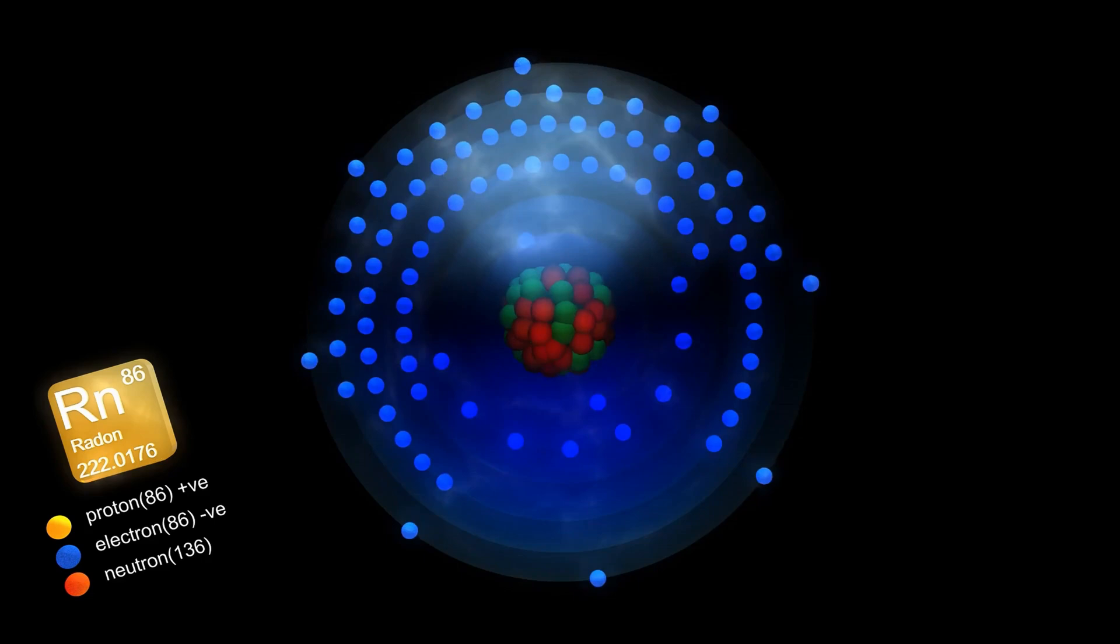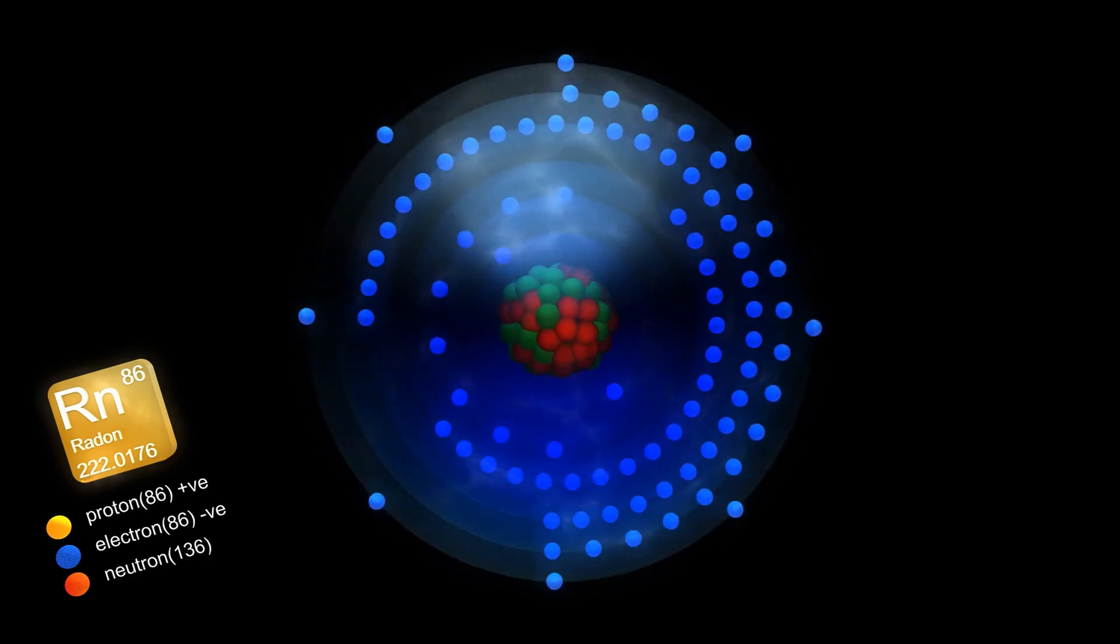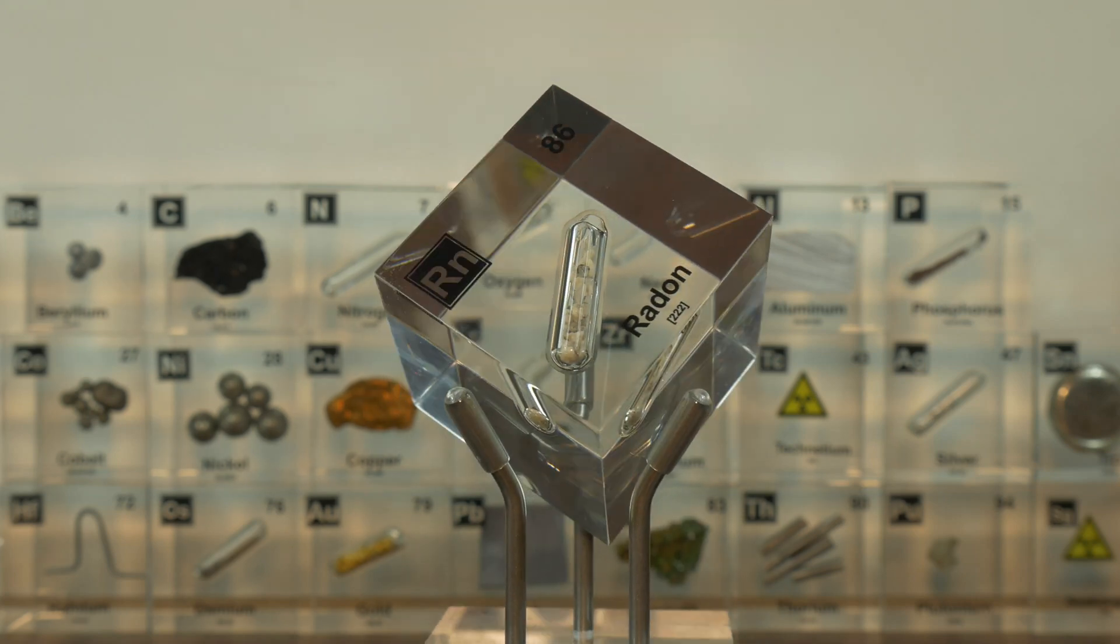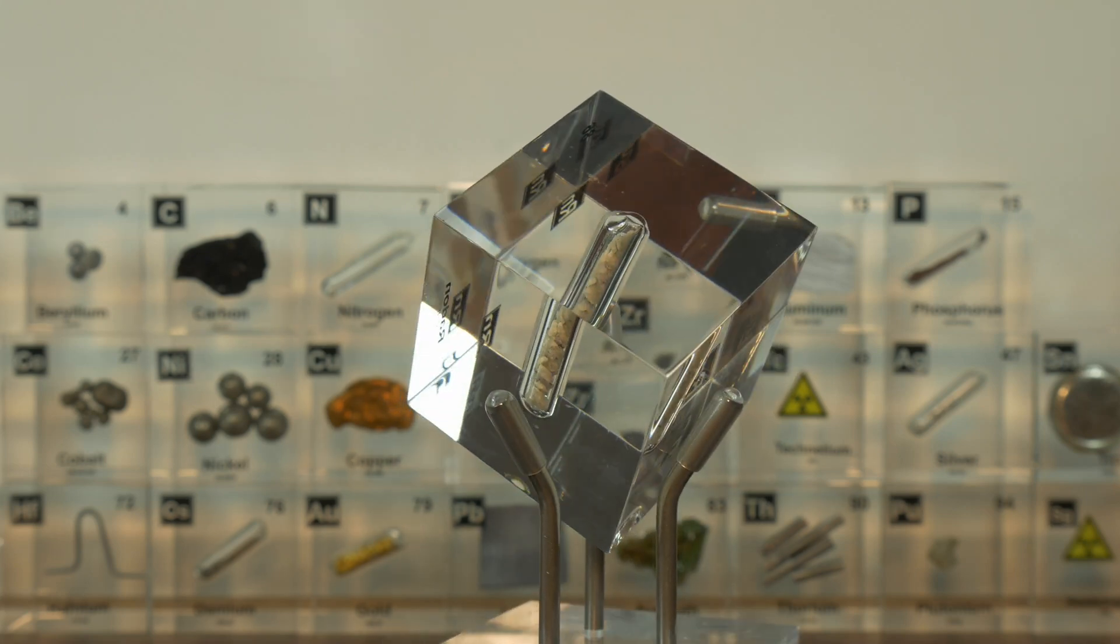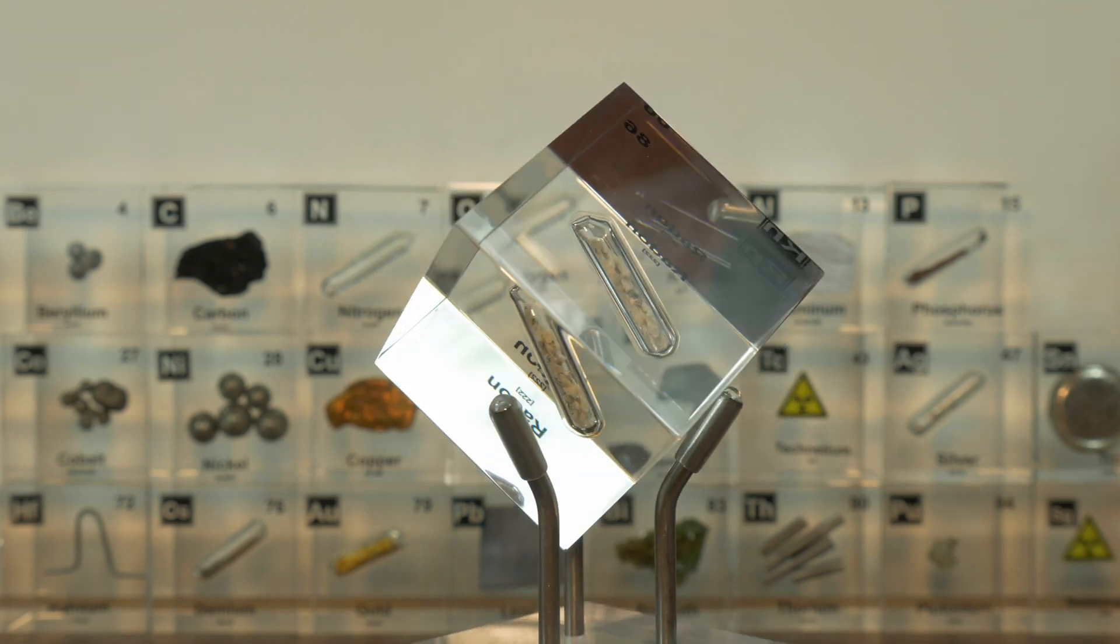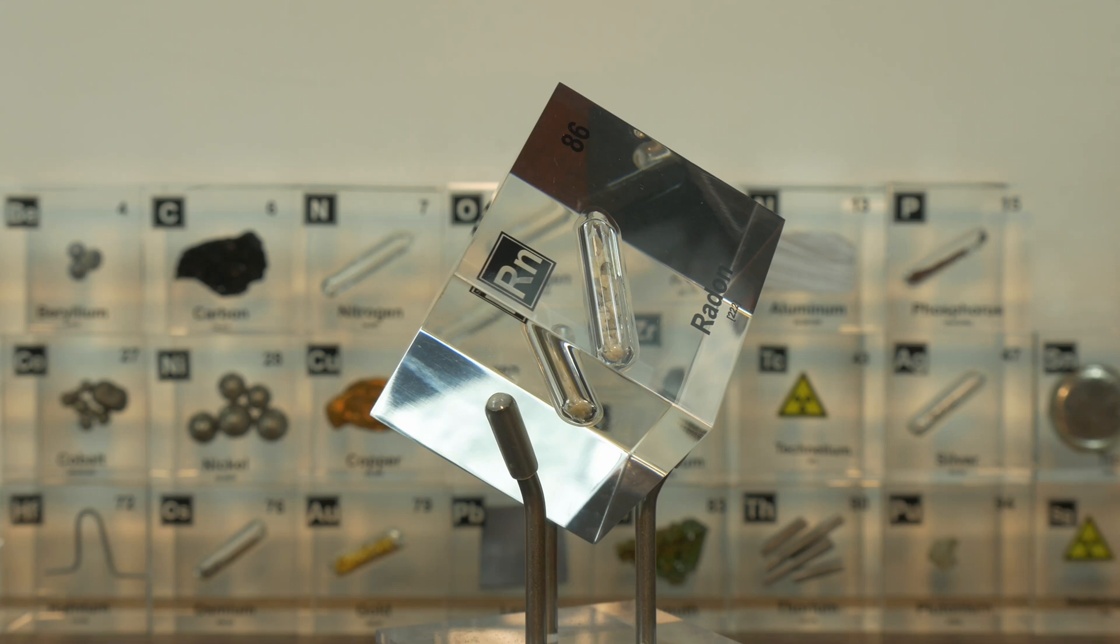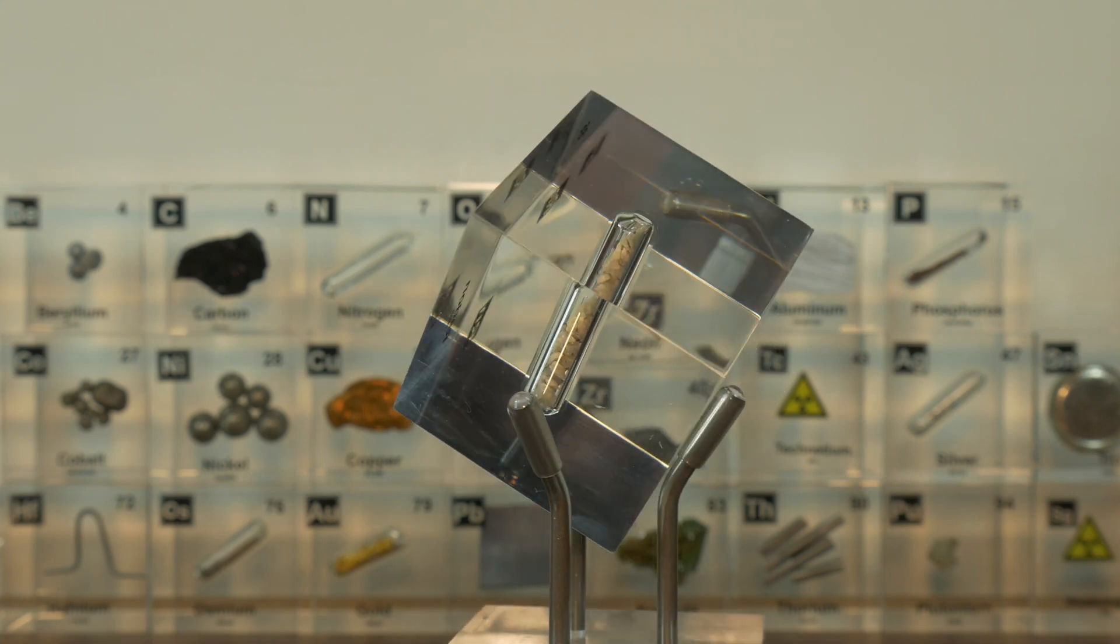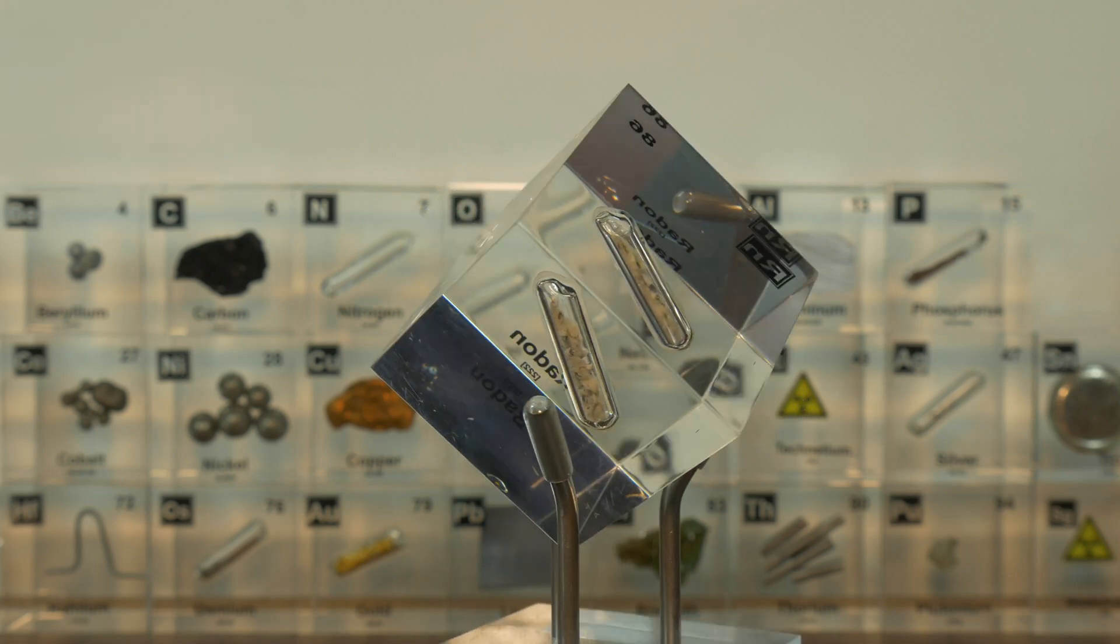Now radon has chemical symbol Rn and an atomic number of 86, which means that it has 86 protons. It is colorless, odorless and tasteless, making it undetectable without specialized instruments. Radon is a pretty dense gas, and with a density of about 9.73 kilograms per cubic meter, it is around nine times heavier than air. It transitions from a gas to a liquid at minus 61.8 degrees Celsius and solidifies at minus 71 degrees Celsius. Now when solidified, it emits a yellow phosphorescence, a striking reminder of its radioactive nature. Now chemically, radon is inert under normal conditions as it belongs to the noble gases group. However, it can form compounds under specific circumstances. For example, in 1962 radon fluoride was synthesized, demonstrating that radon is not entirely unreactive.